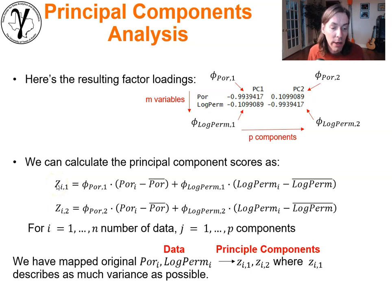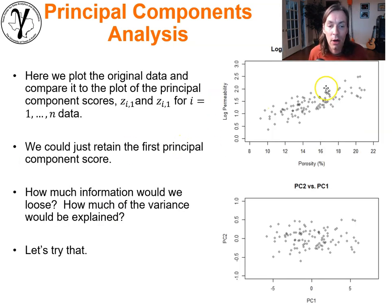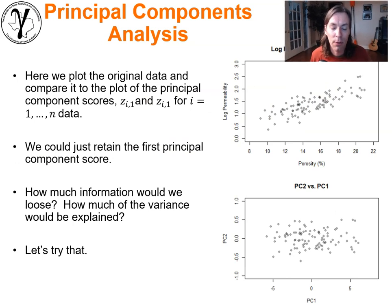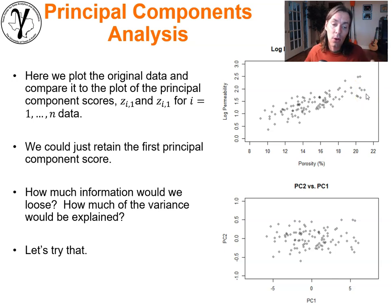That gives us the principal component score for sample one, and we repeat for all n samples. Now the data is mapped into principal component scores. Looking at original log permeability versus porosity versus principal component score one and two — all we've done is a rotation, with a standardization that spread things out slightly.